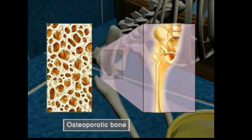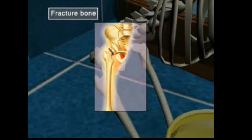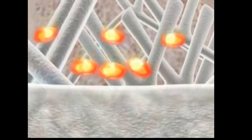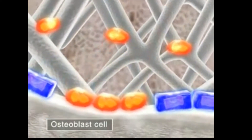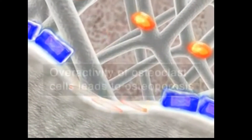Osteoporosis, or porous bone, is characterized by low bone mass and structural deterioration of bone tissue, which leads to bone fragility and increased susceptibility to fractures of the hip, spine, and wrist. Two essential cells are involved in the daily turnover of the bone: osteoblast cells and osteoclast cells.